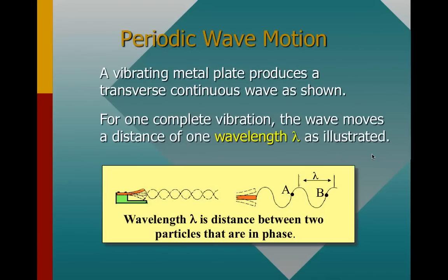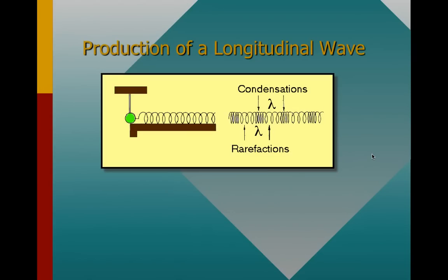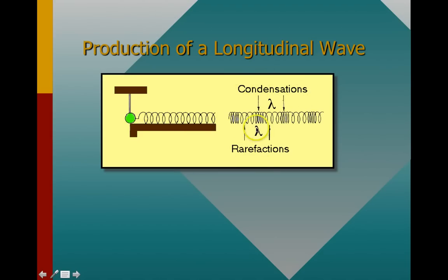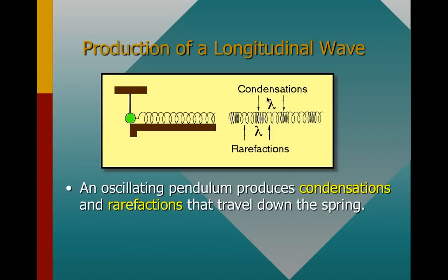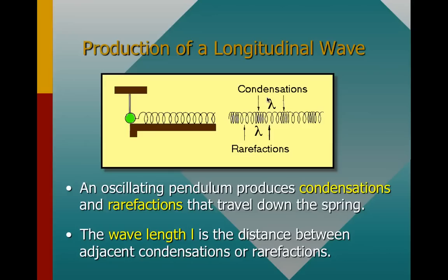We can also make the side-to-side motion of a longitudinal wave. If we have a ball attached to a pendulum rod moving back and forth, which causes a spring to move back and forth, we have what we call condensations and rarefactions. Condensations are areas of condensed spring, and rarefactions are areas of non-condensed, stretched-out, or spaced locations. The wavelength is again the distance between any two similar parts of that wave — for example, the distance between two rarefactions or two condensations.